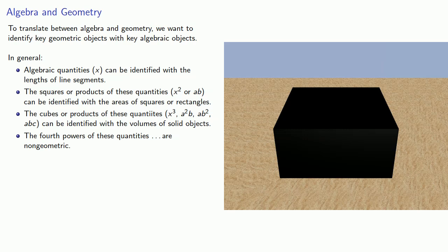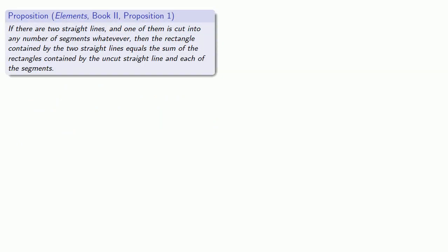Or is there? We'll take a look at that in a bit. For example, Book 2 opens up with the following proposition: If there are two straight lines and one of them is cut into any number of segments whatsoever, then the rectangle contained by the two straight lines equals the sum of the rectangles contained by the uncut straight line and each of the segments.